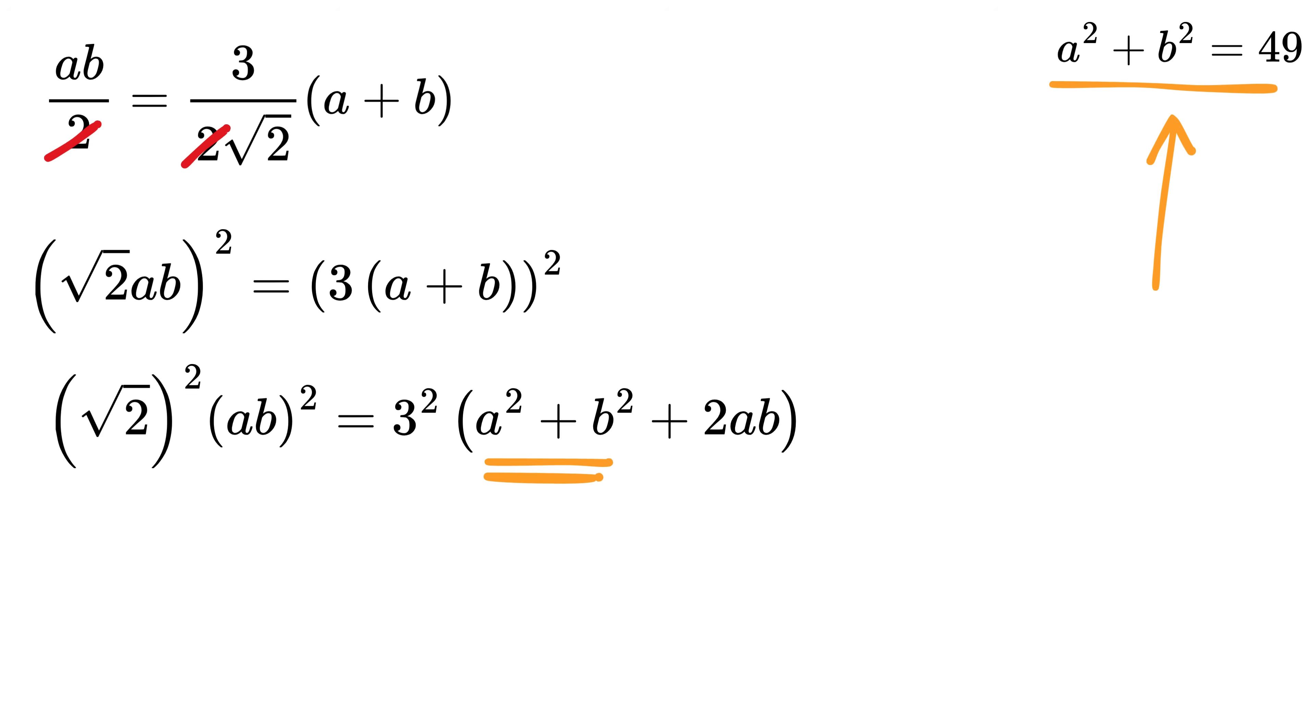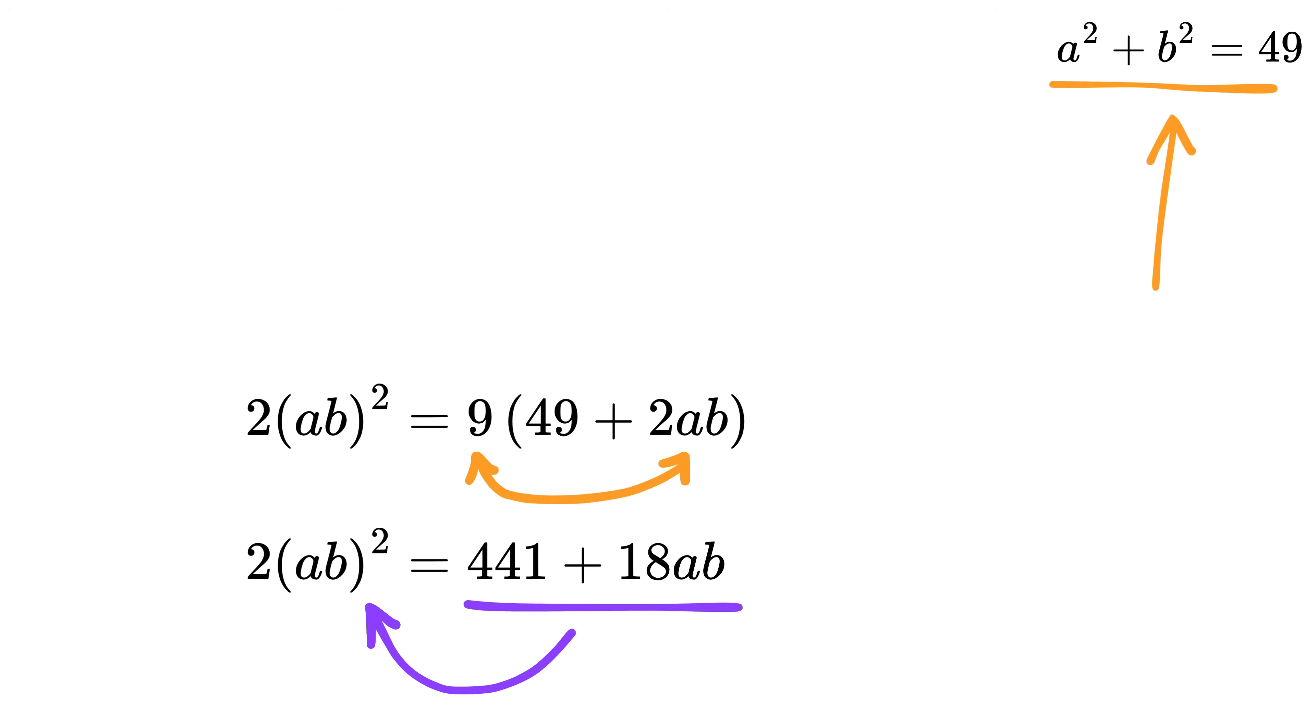But A squared plus B squared equals 49, so put 49 here. Also, square root of 2 squared is 2 and 3 squared is 9. Now multiply 9 with this to get 49 times 9, or 441, plus 18 times AB. Then move everything to one side to get 2 times AB squared minus 18AB minus 441 equals 0.